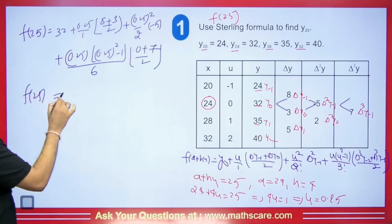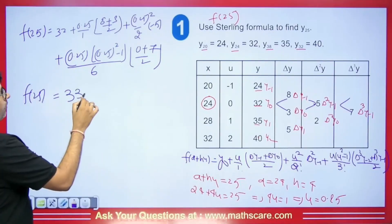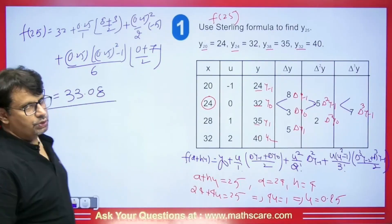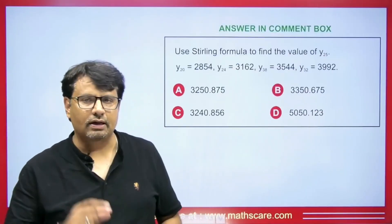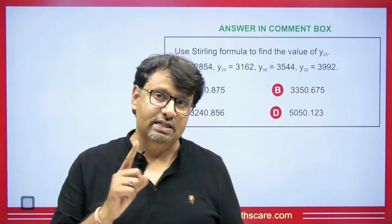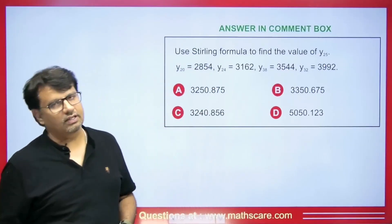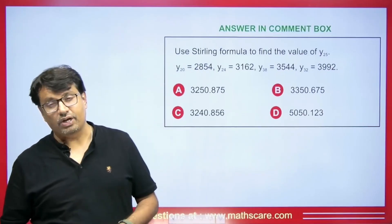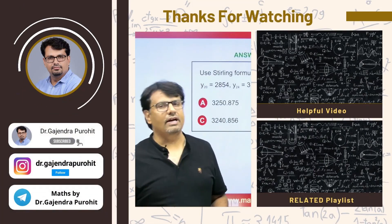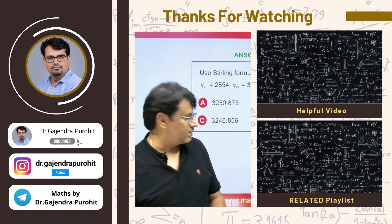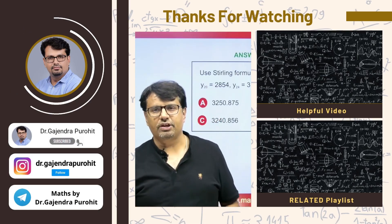The value of F(25), when calculated on the calculator, comes out to be 33.08. This question is for the comment box — comment and let me know the answer. If you haven't subscribed to the channel, please do it. For old numerical analysis videos, the complete playlist is available. If you are preparing for CSIR NET/GATE or IIT JAM, check out the playlist here and subscribe. A big thank you to all of you. Bye-bye.